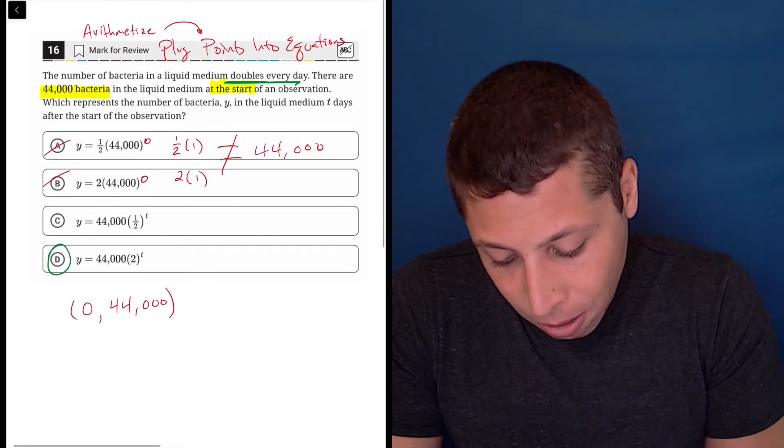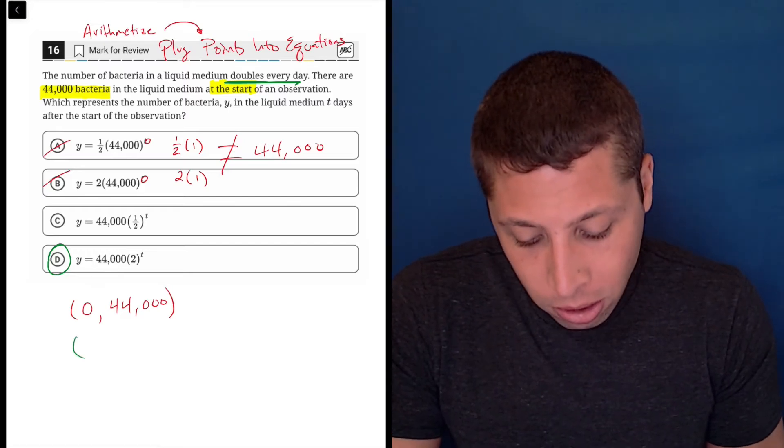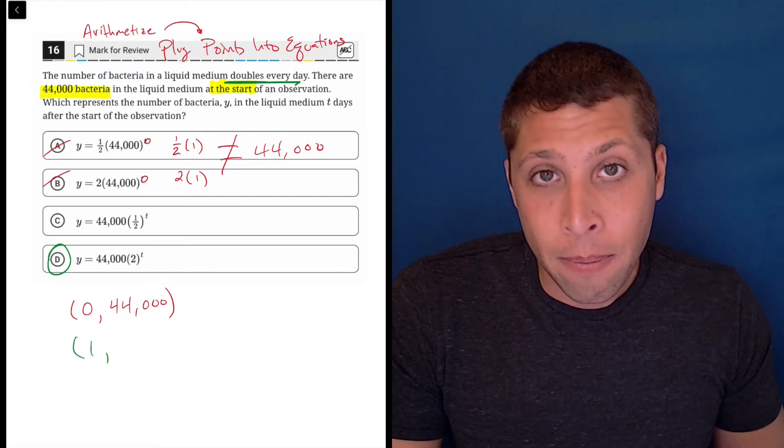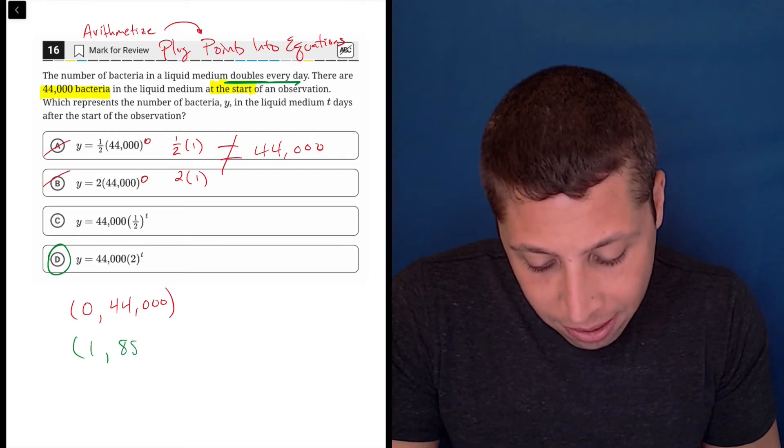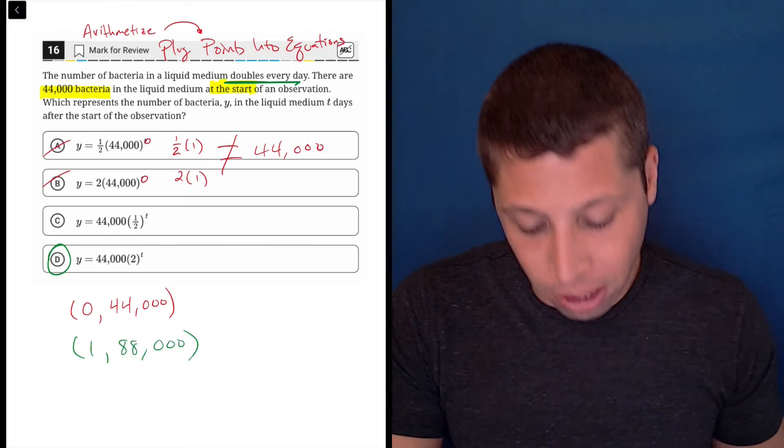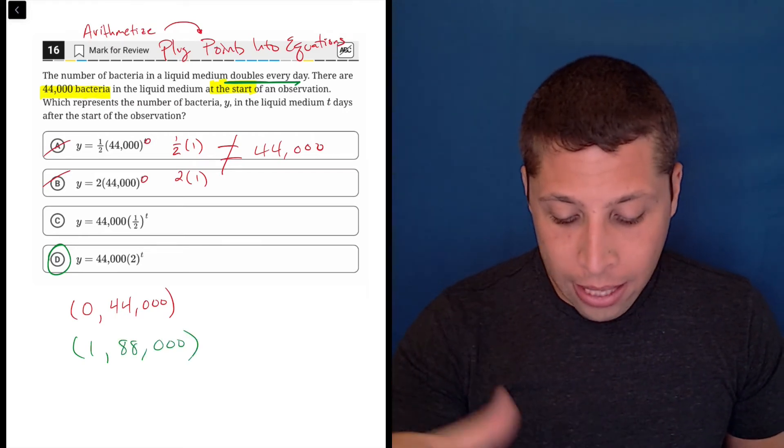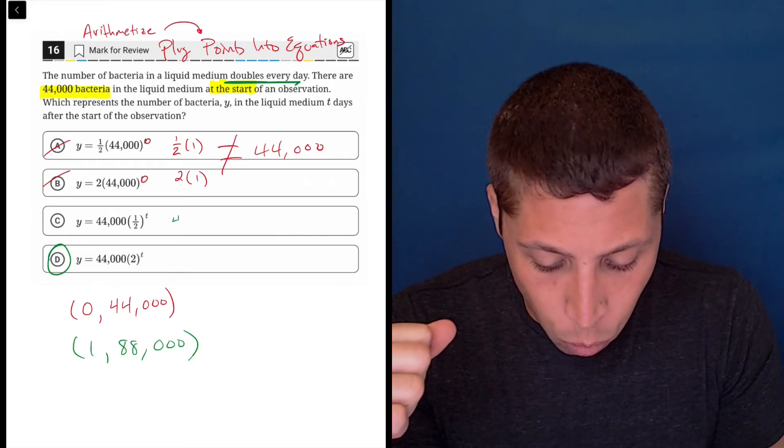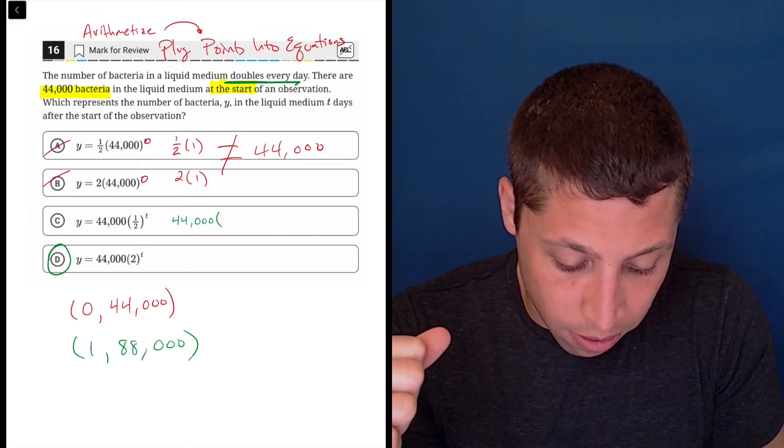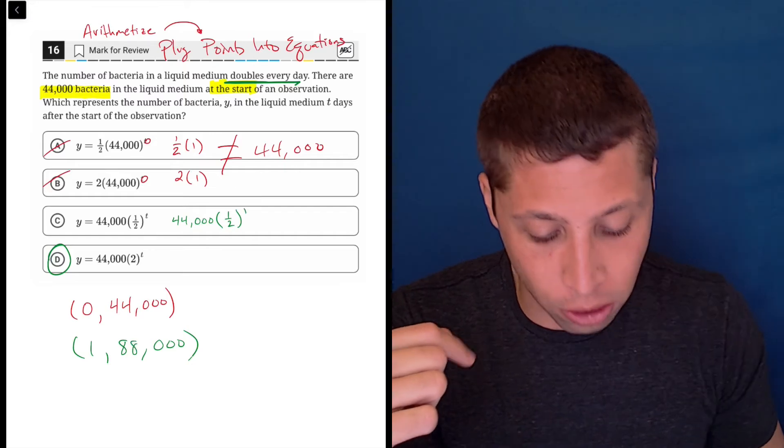But let's make sure we understand why because we could also pick a point. If it doubles every day after one day has passed, then 88,000 bacteria should be there. But if we did that point in choice C, we'd have 44,000 times one half to the first.